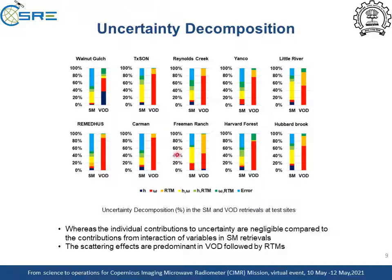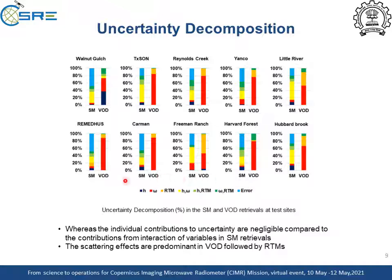The uncertainty contributions from H, omega, RTM and their interactions in the SM and VOD retrievals are decomposed across all test sites as shown in this figure. From this figure, we can infer that SM performs similarly in all land-use land cover types, with more uncertainty due to the interactions of model parameters rather than their individual contributions to the SM uncertainty.